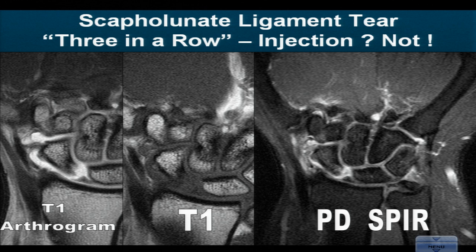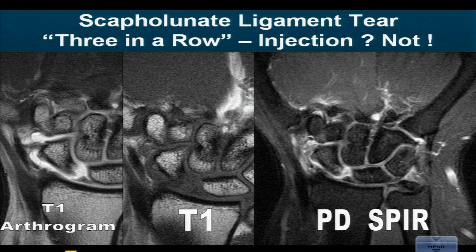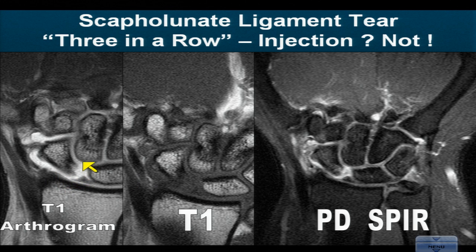Let's start with this triple image. On the left side you see an MR arthrogram where contrast has been placed into the radio-scaphoid articulation, just as it would be with any conventional arthrographic technique. You can inject any one of three compartments, but this is the most typical compartment injected. When we're looking at the intrinsic ligaments, we look for extravasation through the scapholunate or the lunatotriquetral interval into the mid-carpal space.